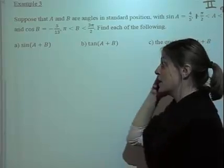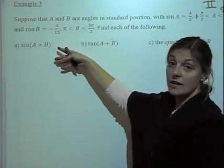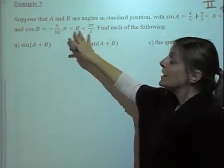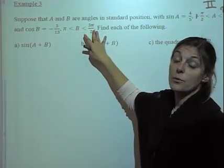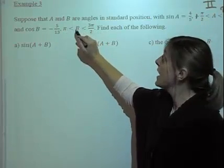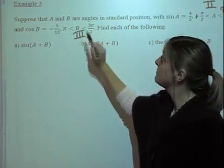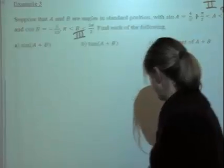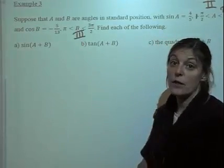And then cosine of b is negative 5 thirteenths, and b is in between pi and 3 pi over 2, so that puts it in the third quadrant. So find each of the following.